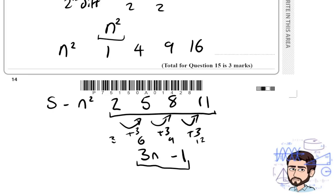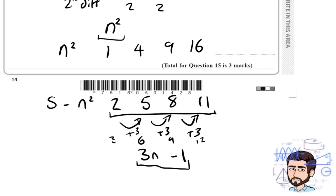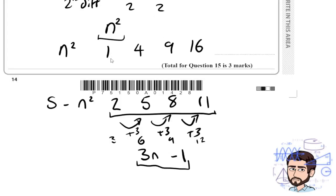In other words, we know that our sequence, our original sequence, is a combination of n squared, this sequence, and this 3n minus 1 that we've just worked out. Because if you add these two numbers together, 1 and 2, 4 and 5, 9 and 8, 16 and 11, you get 3, 9, 17, 27. So the nth term of our original sequence is n squared plus 3n take away 1.